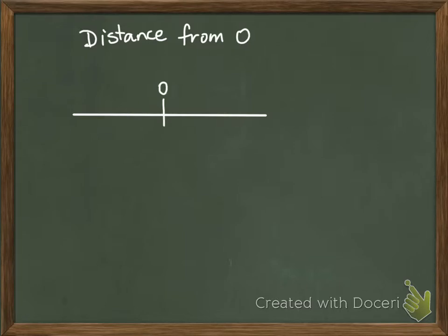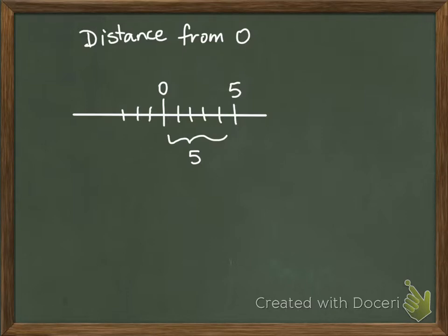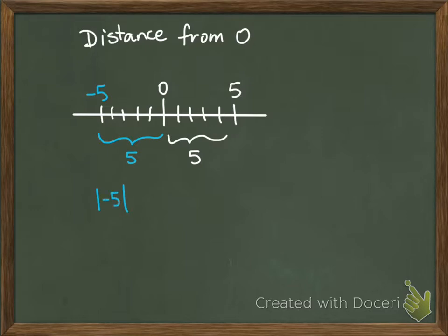If you go five spaces to the right — one, two, three, four, five — you end up at positive five. This positive five is five spaces away from zero. If you go to the left five — one, two, three, four, five — you end up at negative five, because that's how our number line works. But notice this is also five spaces away from zero. So it doesn't matter if you go left or right — they're both five spaces away from zero. Well, that's what your absolute value is. Absolute value, which is represented by these goal posts, is telling us how far from zero it is — just the number all by itself.